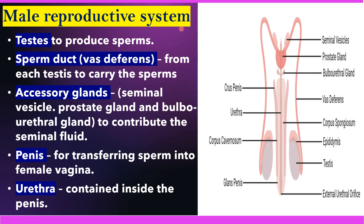Male reproductive system: there are different organs present — testis, sperm duct or vas deferens, accessory glands, penis, and urethra. In humans, the male consists of a pair of testes (singular: testis, plural: testes). The function of the testis is to produce sperms, which is why it comes under the primary reproductive part. All other organs — sperm duct or vas deferens, accessory glands — come under the accessory reproductive part.